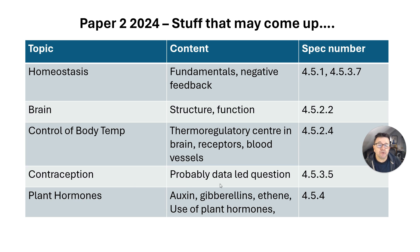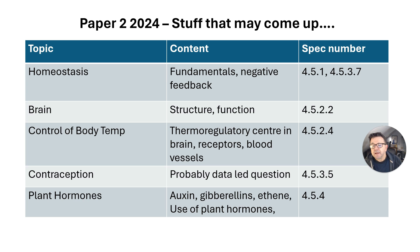On contraception, they usually give you lots of data and information to analyse and compare — looking at differences and similarities, and maybe doing some calculation. Then plant hormones: look at tropisms, which come up regularly, and also the use of plant hormones, particularly auxins, gibberellins, and ethene.